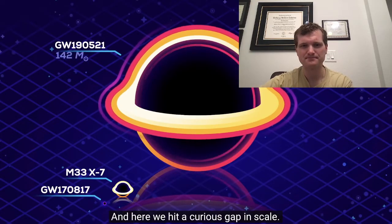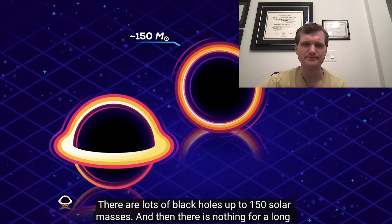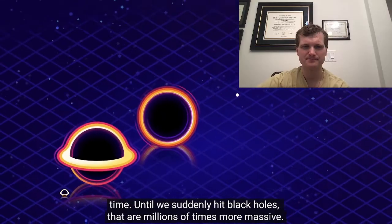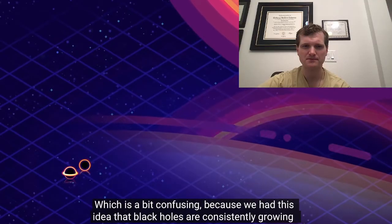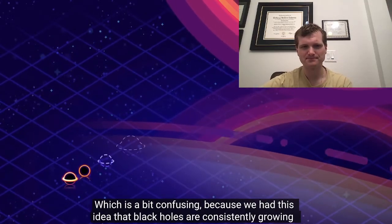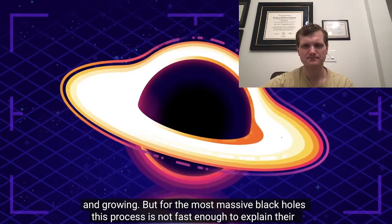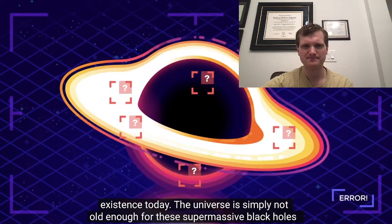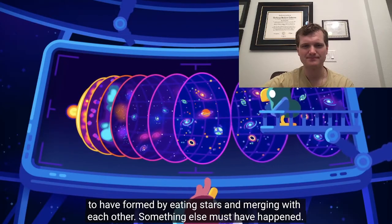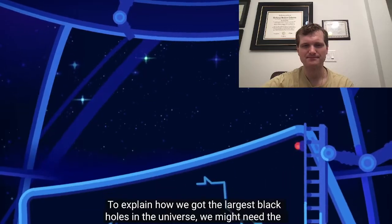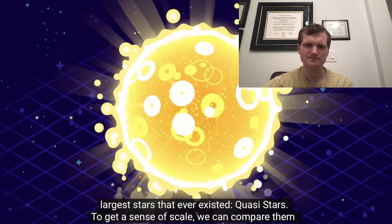Than the combined light from all the stars in the Milky Way in 4,400 years. The new black hole they formed is about the size of Germany and is 142 solar masses. And here we hit a curious gap in scale. There are lots of black holes up to 150 solar masses, and then there's nothing for a long time until we suddenly hit black holes that are millions of times more massive, which is a bit confusing because we had this idea that black holes are consistently growing and growing. But for the most massive black holes, this process is not fast enough to explain their existence today. The universe is simply not old enough for these supermassive black holes to have formed by eating stars and merging with each other. Something else must have happened. To explain how we got the largest black holes in the universe, we might need the largest stars that ever existed. Quasi-stars.